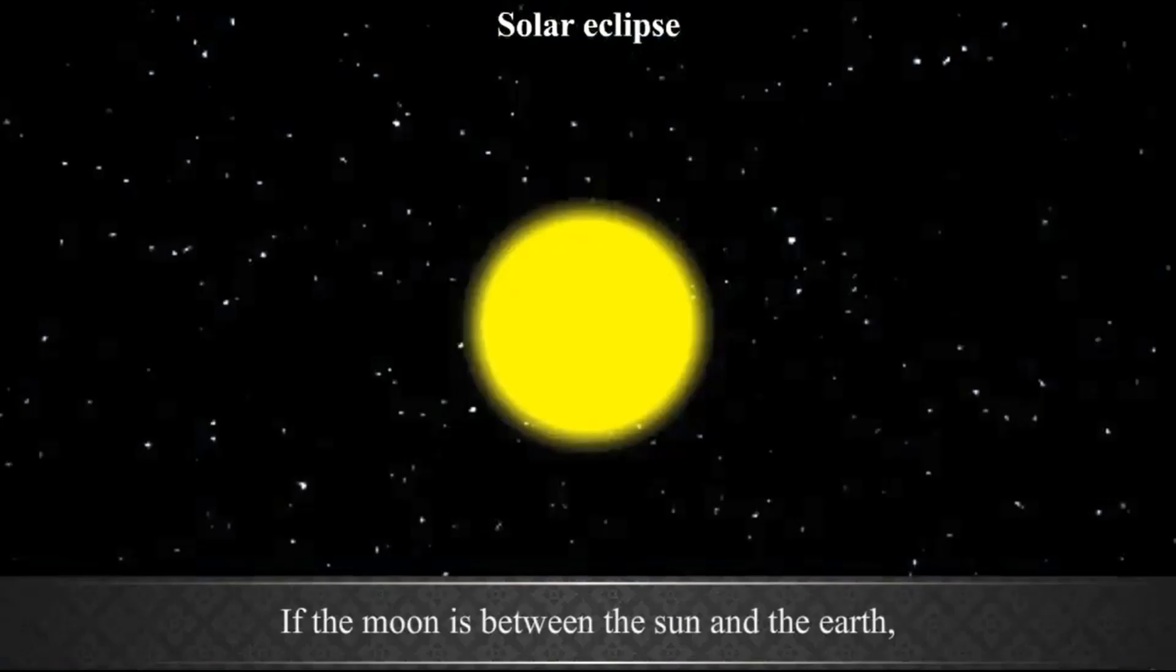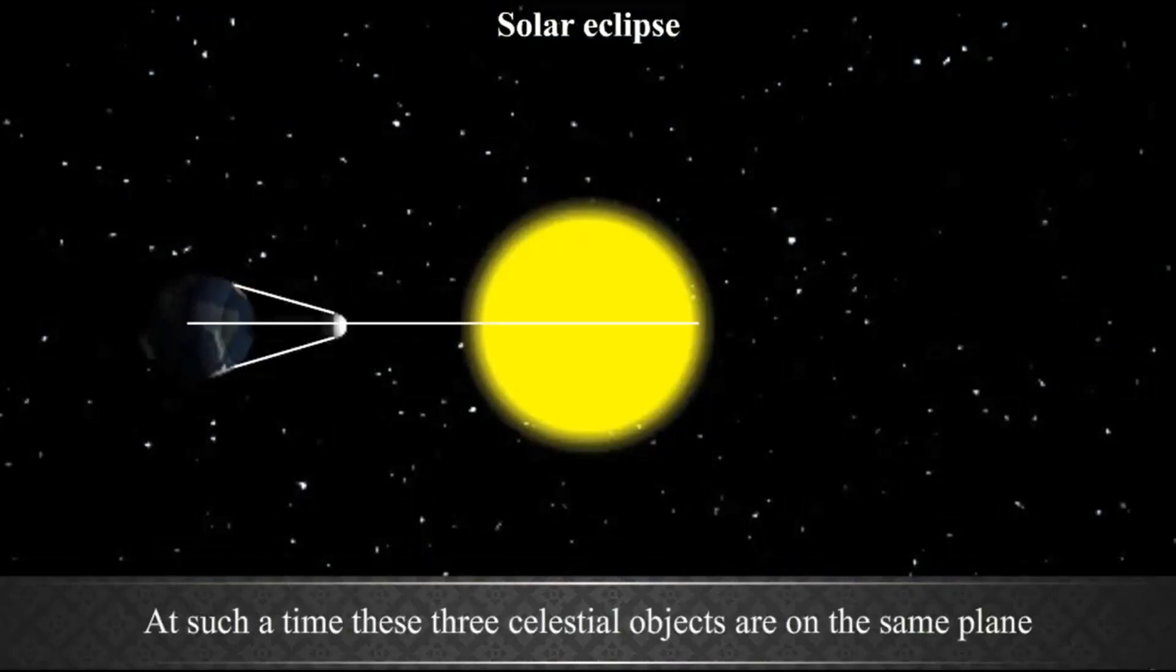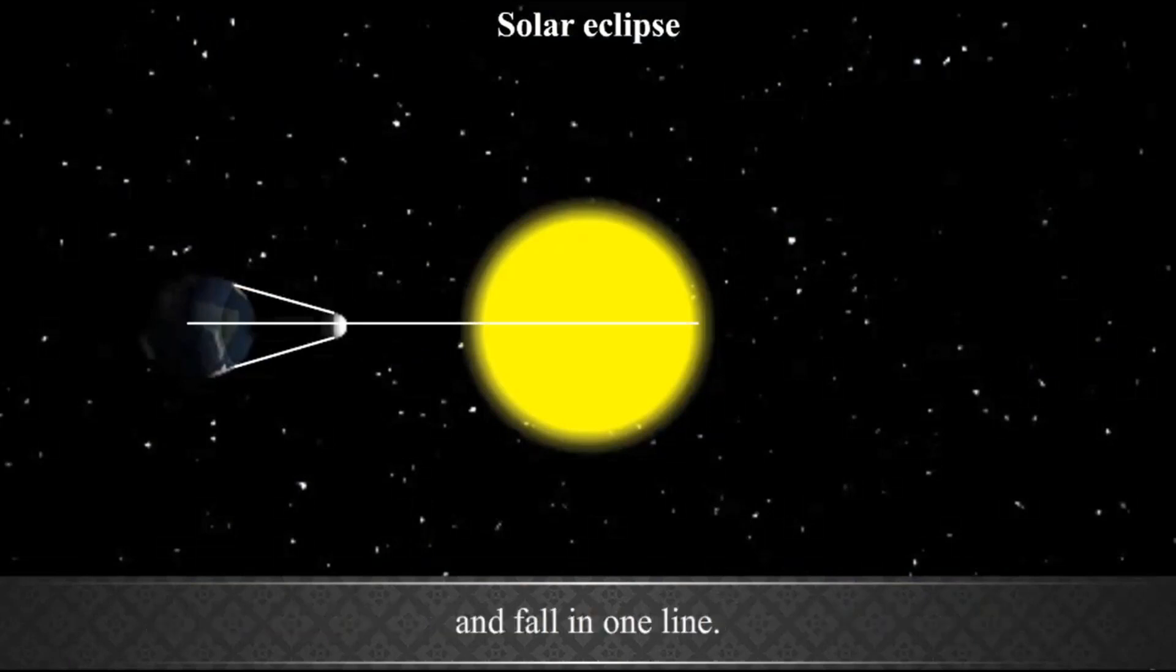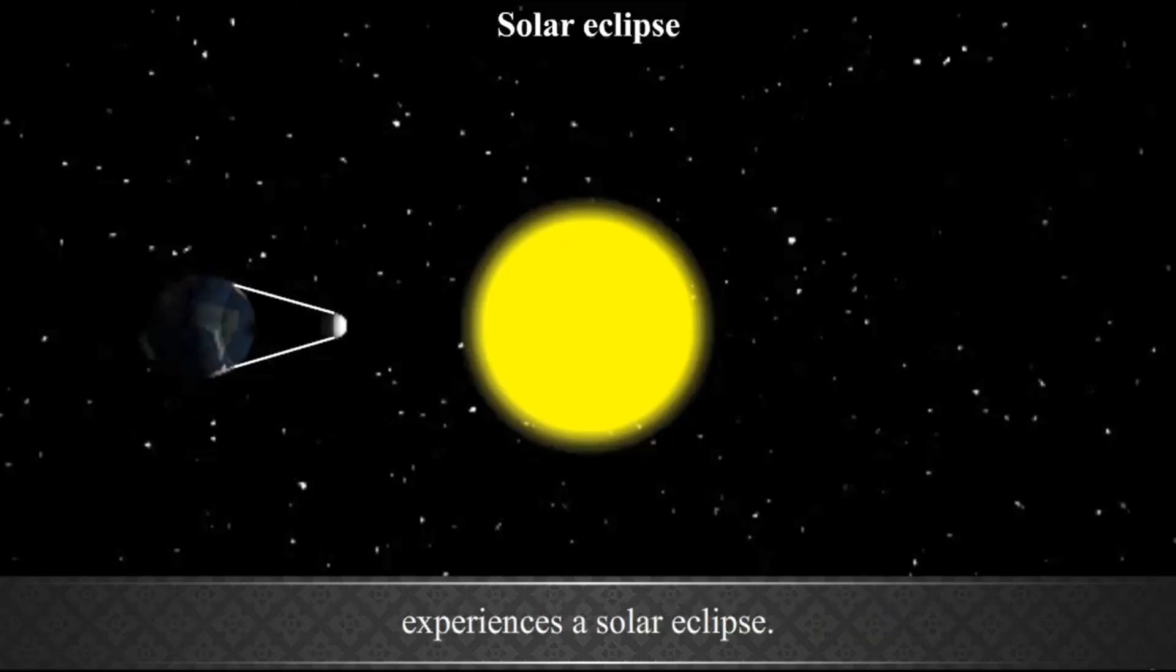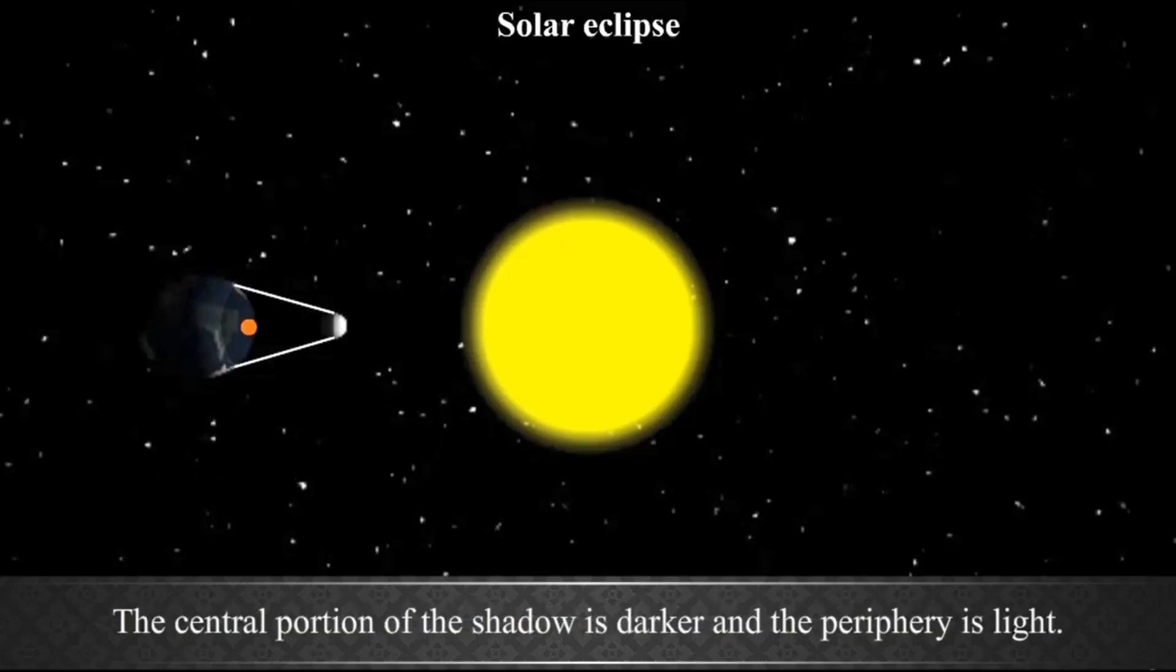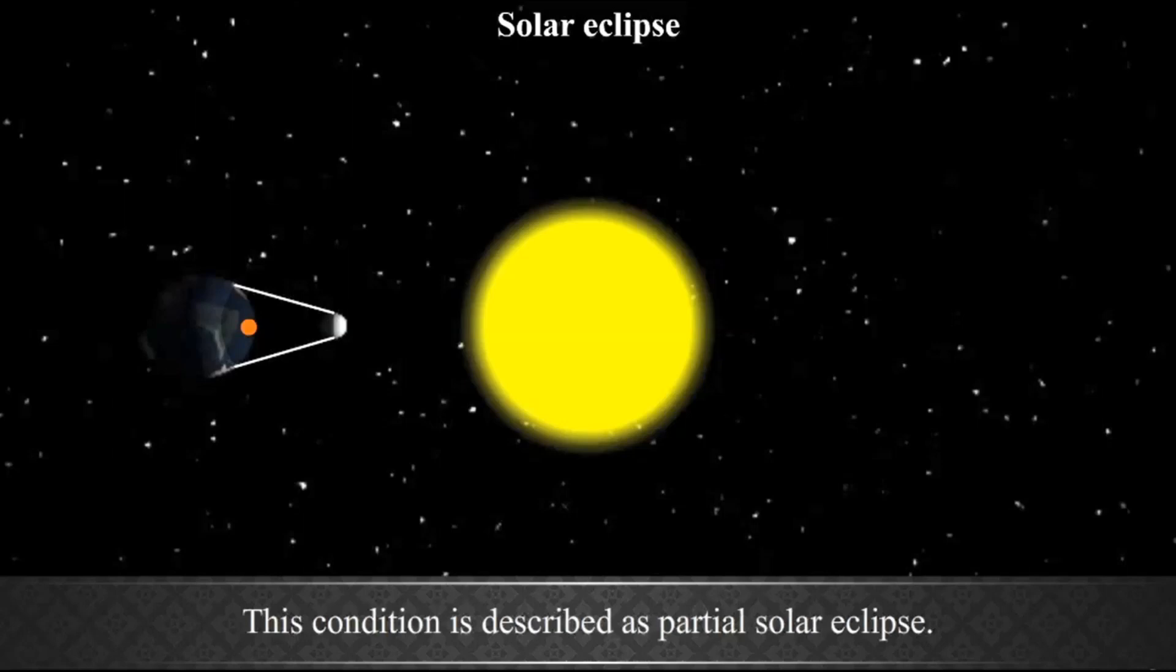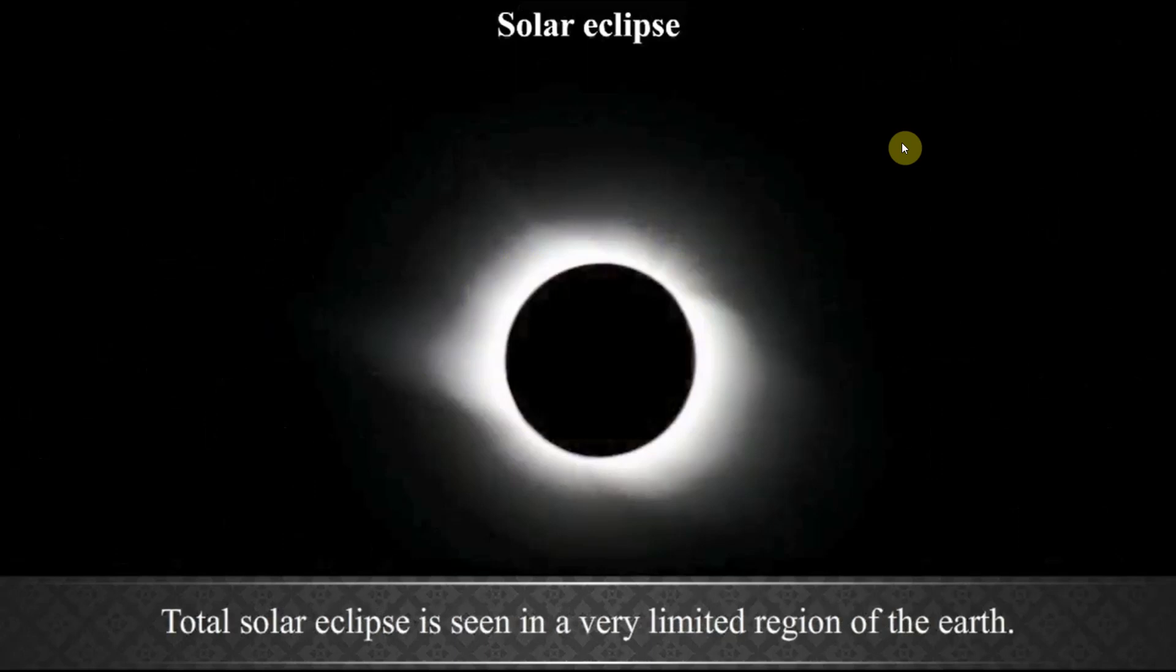Solar Eclipse. If the Moon is between the Sun and the Earth, the shadow of the Moon falls on the Earth. At such a time, these three celestial objects are on the same plane and fall in one line. Hence, the place on the Earth where the Moon's shadow falls experiences a solar eclipse. This shadow is of two types. The central portion of the shadow is darker and the periphery is light. In the area of dark shadow on the Earth, the Sun becomes completely invisible. This condition is known as total solar eclipse. However, during the same period, at the places where the shadow is lighter, the Sun disk appears partially covered. This condition is described as partial solar eclipse. Total solar eclipse is seen in a very limited region of the Earth.